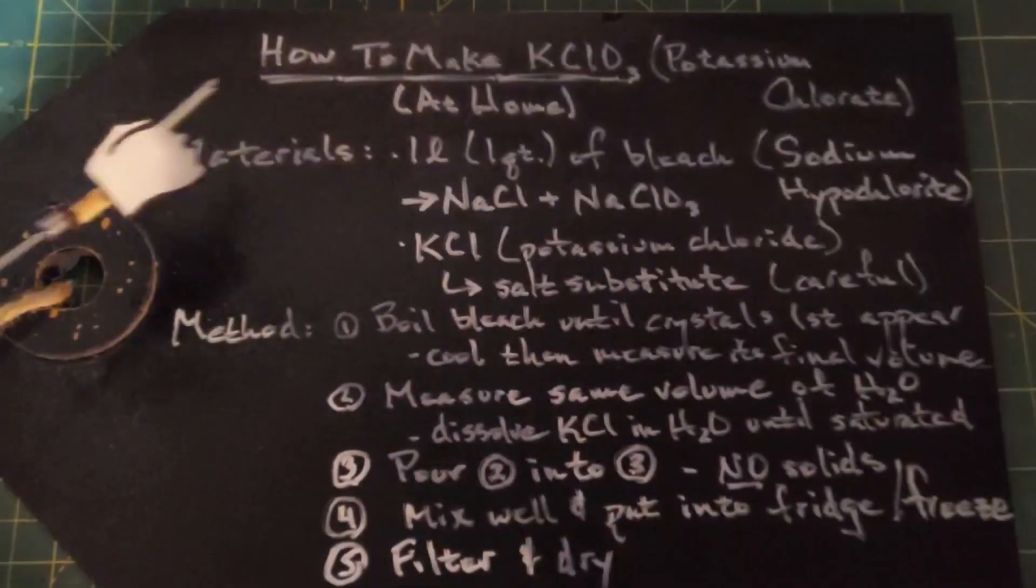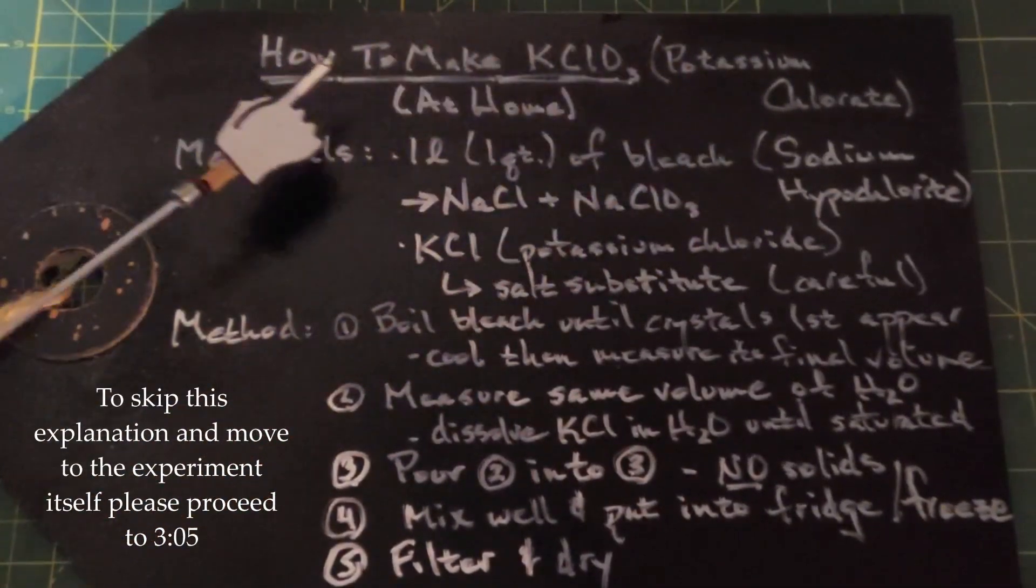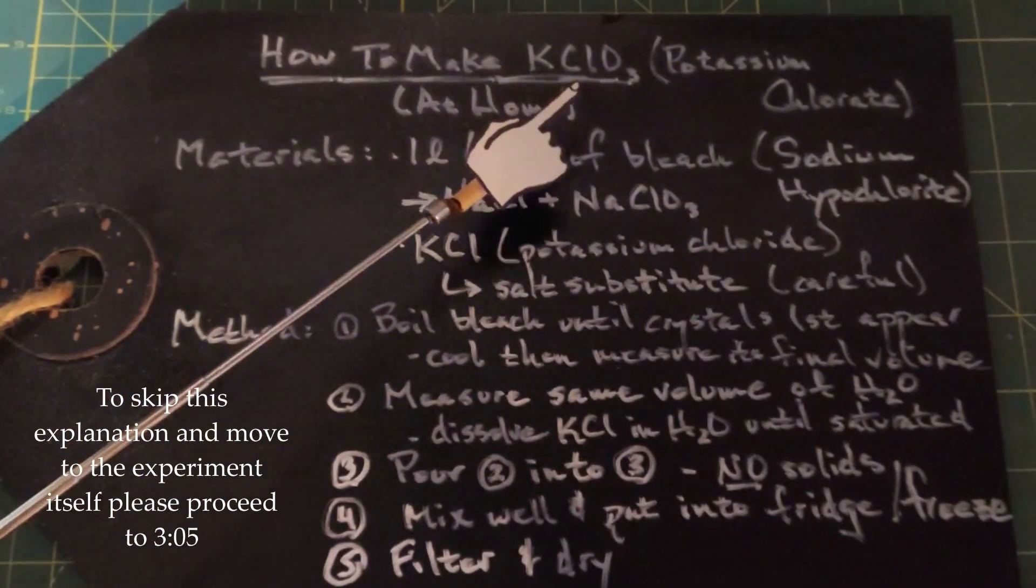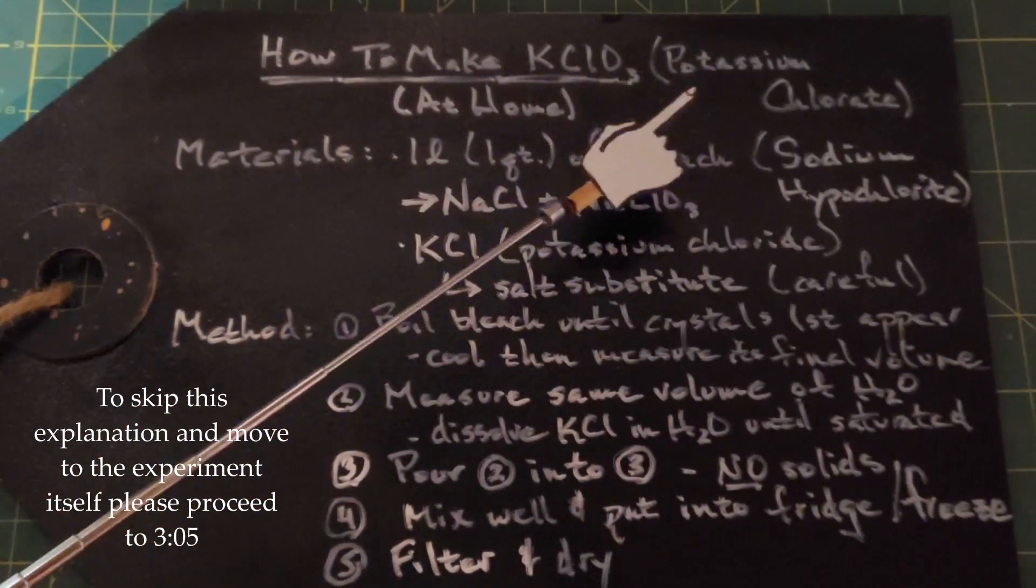In this video we are going to look into how to make potassium chlorate, and this is going to be with ingredients you can find at your home. Potassium chlorate is an oxidizer. It can be unstable. I've worked with it quite a bit.